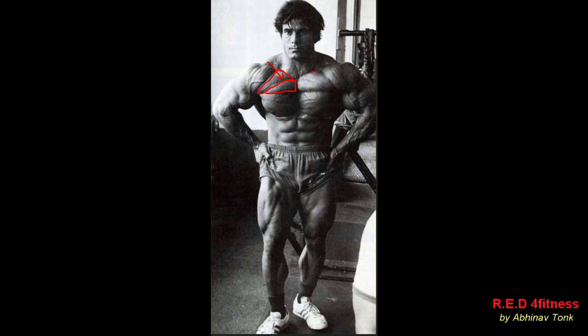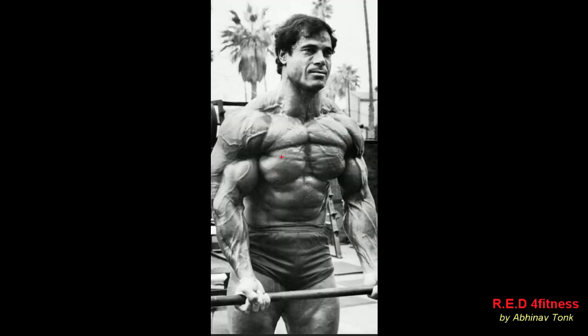You can clearly see it in this picture. There is another picture of Franco Colombo — you can see how well-defined his upper chest was, clearly separated from the middle chest.